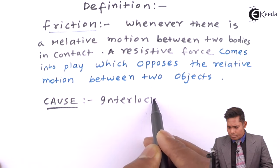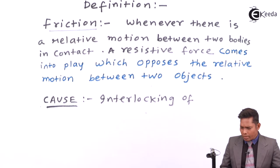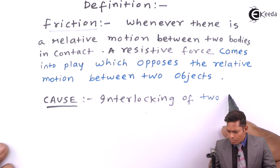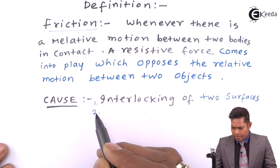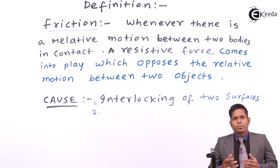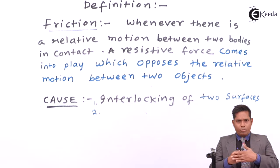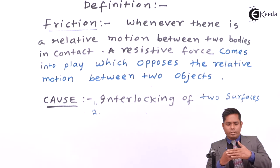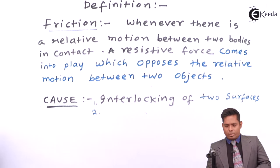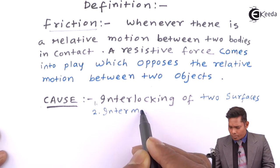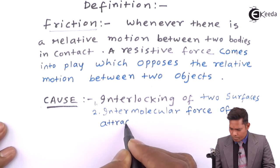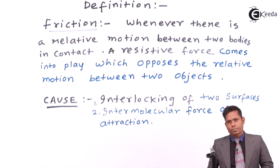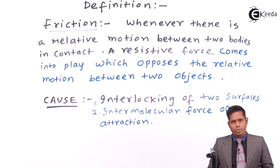The second cause is because of the intermolecular force of attractions — the surface molecules attract each other. So it is because of intermolecular force of attraction, whether it is cohesive or adhesive. These are the causes of friction.